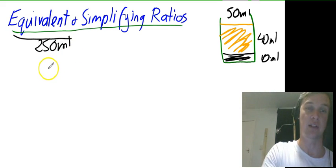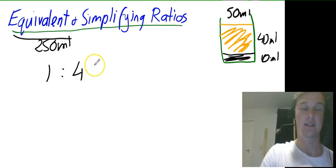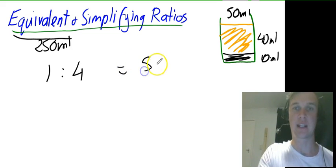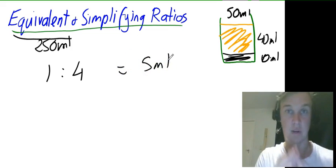So if I have my ratio here I have 1 part Milo, 4 parts milk. And that's a total of 5. But I wanted to get to 250 ml.